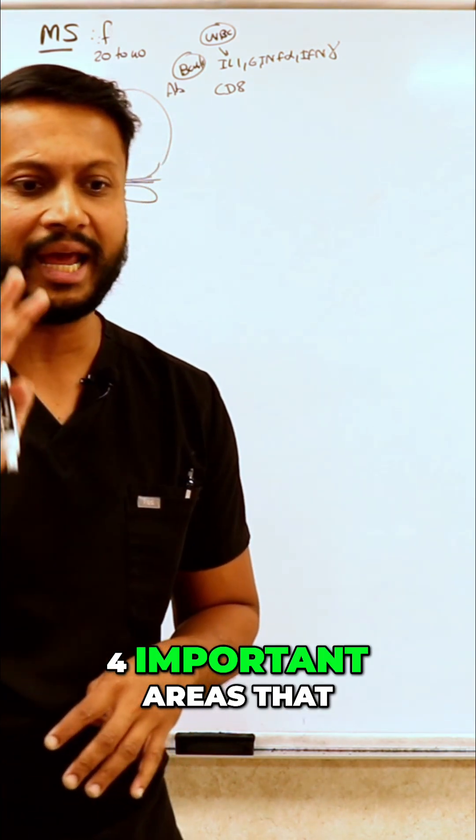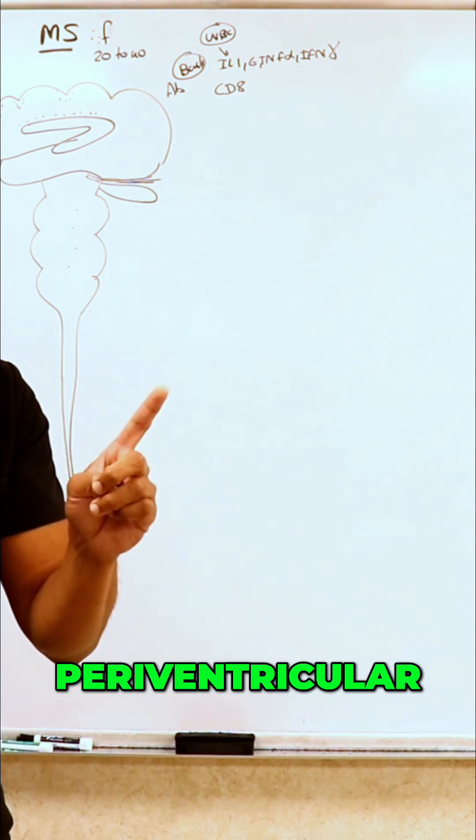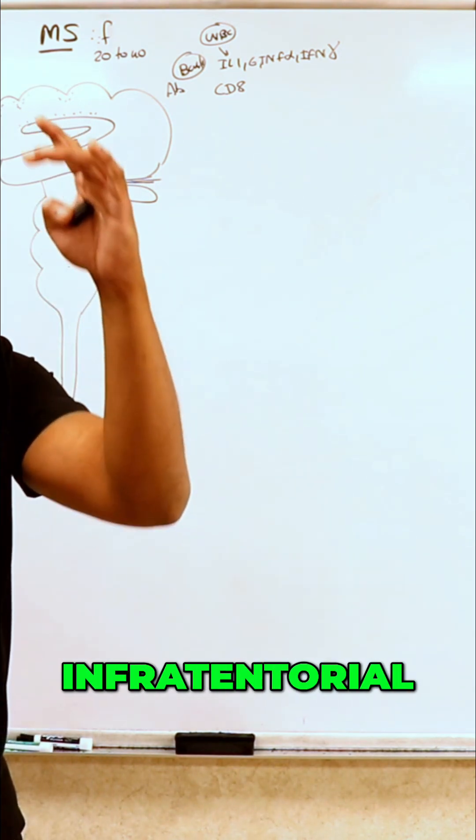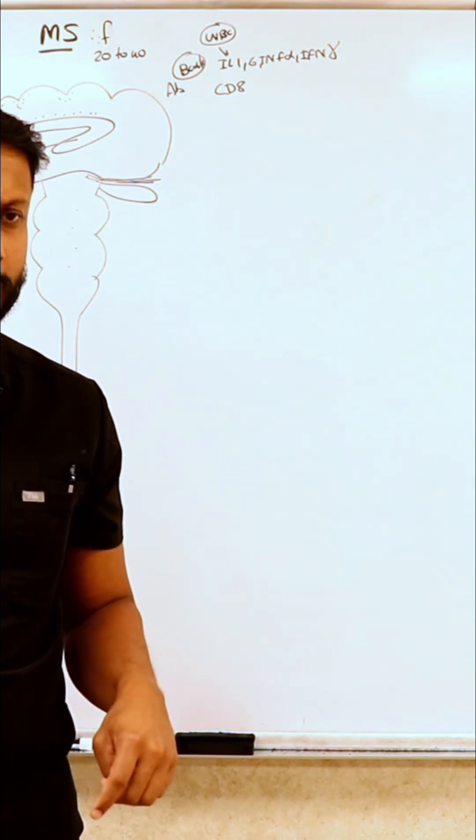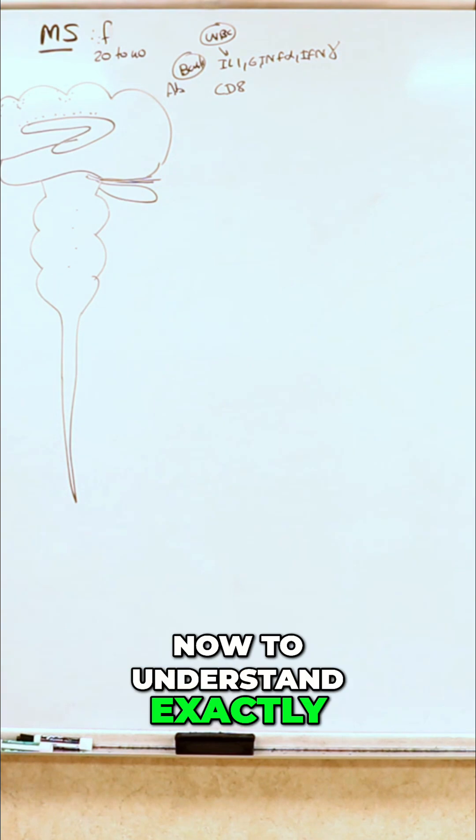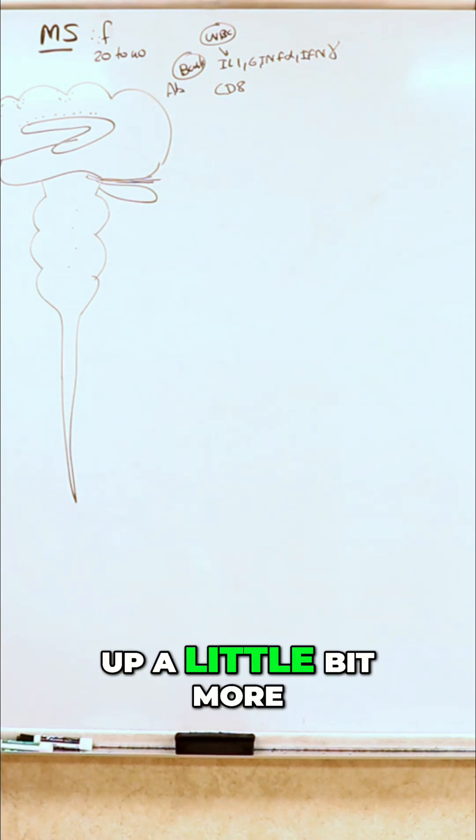So those are the four important areas that you need to know that MS is going to destroy: periventricular, juxtacortical, infratentorial essentially saying brainstem, and spinal cord. Now to understand exactly what the destruction is going to be, we got to open this up a little bit more.